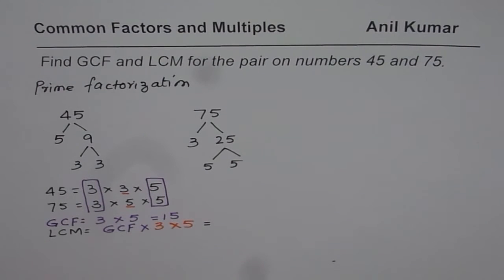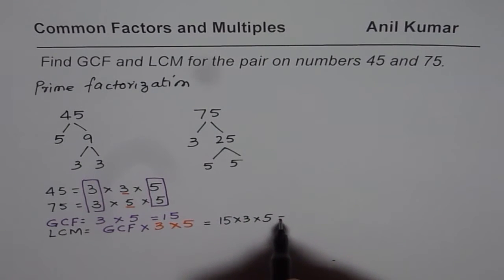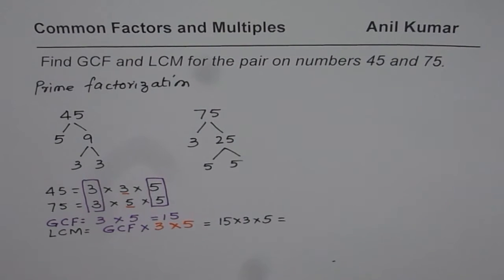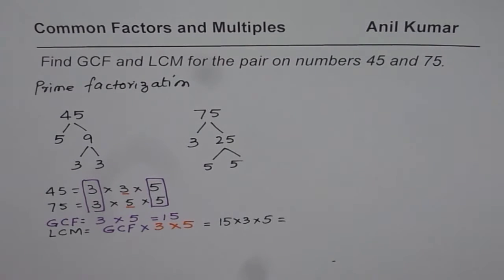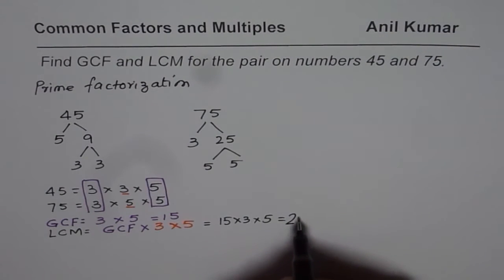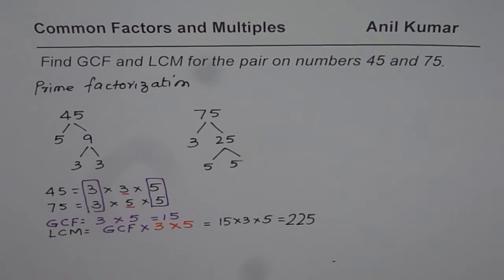The greatest common factor is 15, so we do 15 times 3 times 5. Using the calculator, 15 times 3 times 5 equals 225. So in this particular case, 225 is the least common multiple. That is the way you can find the greatest common factor and the least common multiple.